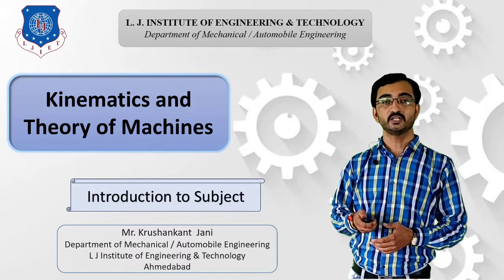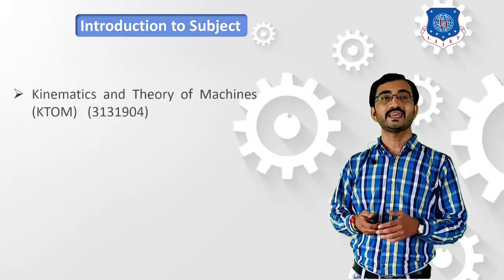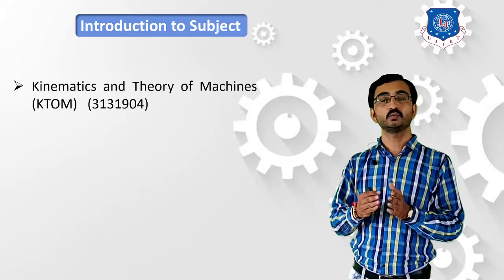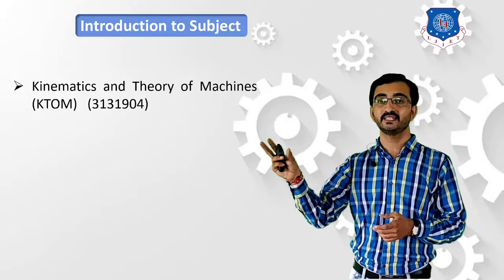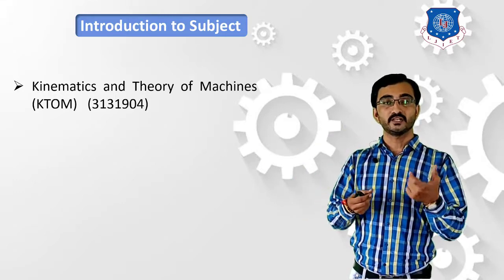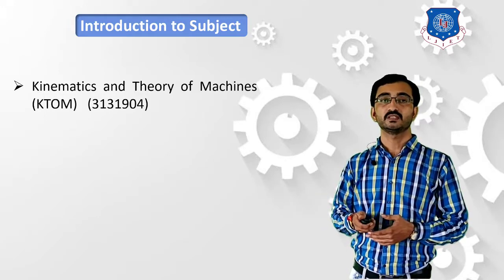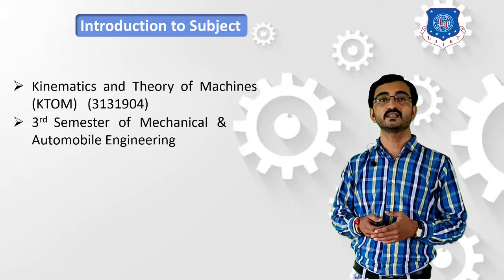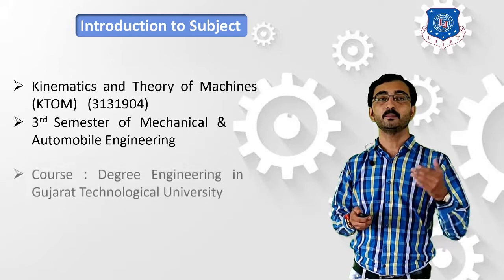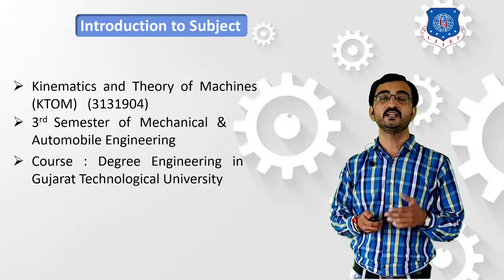This subject is named as Kinematics and Theory of Machine. It is divided into mainly two parts — Kinematics and Theory of Machine. It is also termed as K-TOM, and the subject code is 3131904. This subject is part of the third semester syllabus of Mechanical and Automobile Engineering under degree engineering of Gujarat Technological University.